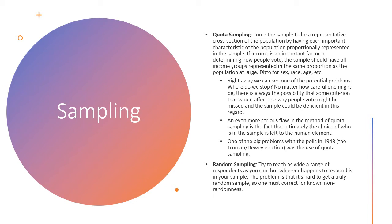One of the potential problems with quota sampling is determining where you stop in trying to make your sample micro-representative. Do you balance by gender? By socioeconomic status? How finely grained do you get — above and below $250,000 a year, or $50,000 ranges, or by quintile? Divisions of things like education are fairly complicated. It can be a real can of worms.